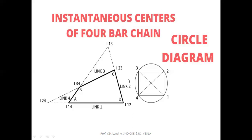To find the remaining ICRs, we draw a circle with 4 points (one per link: 1, 2, 3, 4) representing the links. The known ICRs (fixed and permanent) are drawn as lines joining those points: 1-4, 3-4, 2-3, and 1-2. The remaining ICRs are 1-3 and 2-4, which are called neither fixed nor permanent ICRs. To locate ICR 1,3, we join points 1 and 3 with a dotted line, forming two triangles: triangle 3-2-1 and triangle 1-4-3. Using sides 2-3 and 1-2 from the first triangle, and sides 3-4 and 1-4 from the second, we draw two locus lines through the corresponding links. Where these two lines intersect is ICR 1,3. Similarly for ICR 2,4, using triangles 2-1-4 and 2-3-4 with sides 1-2, 1-4 and 2-3, 3-4 respectively, the intersection gives ICR 2,4.